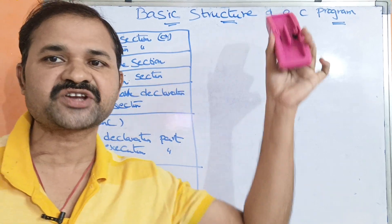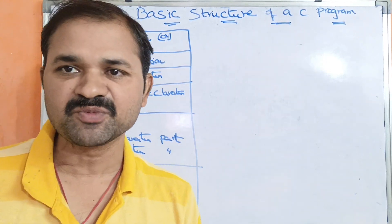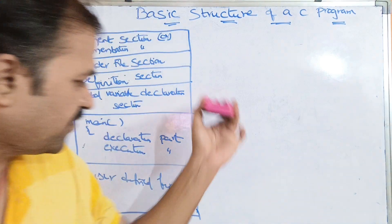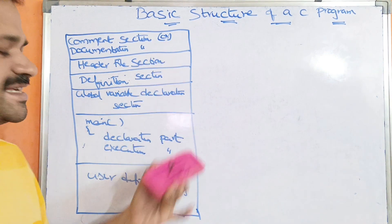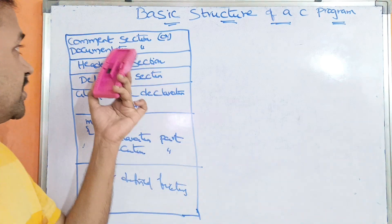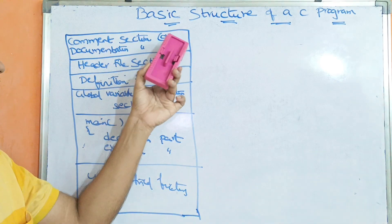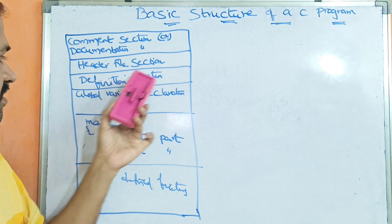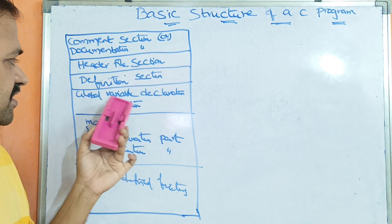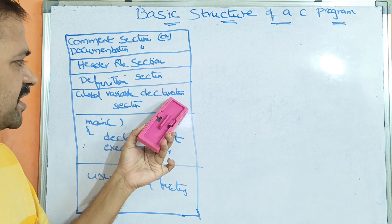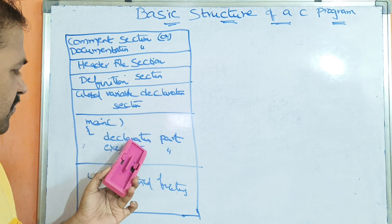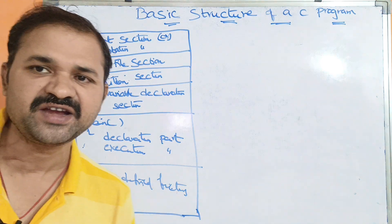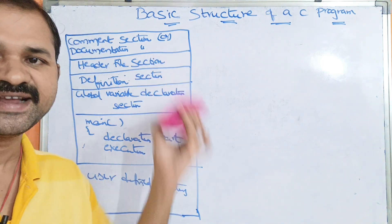Now we are going to discuss the basic structure of a C program. The C program is going to be followed with a total of 6 sections: first, the comment section or documentation section; second, the header file section; third, the definition section; fourth, the global variable declaration section; fifth, the main function; and the last one is user defined function. We will discuss each section one by one.